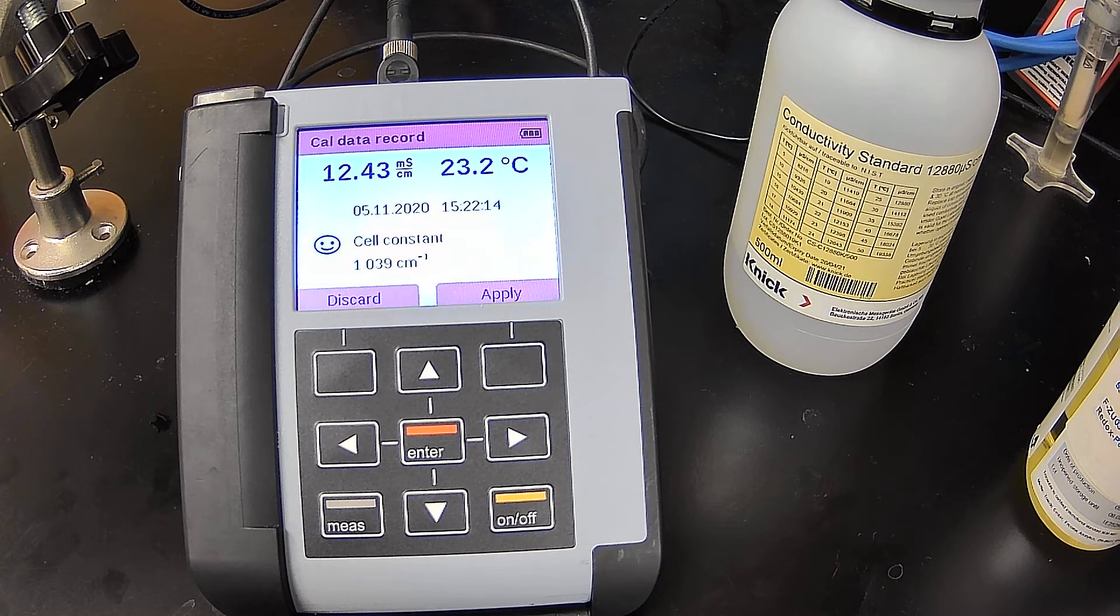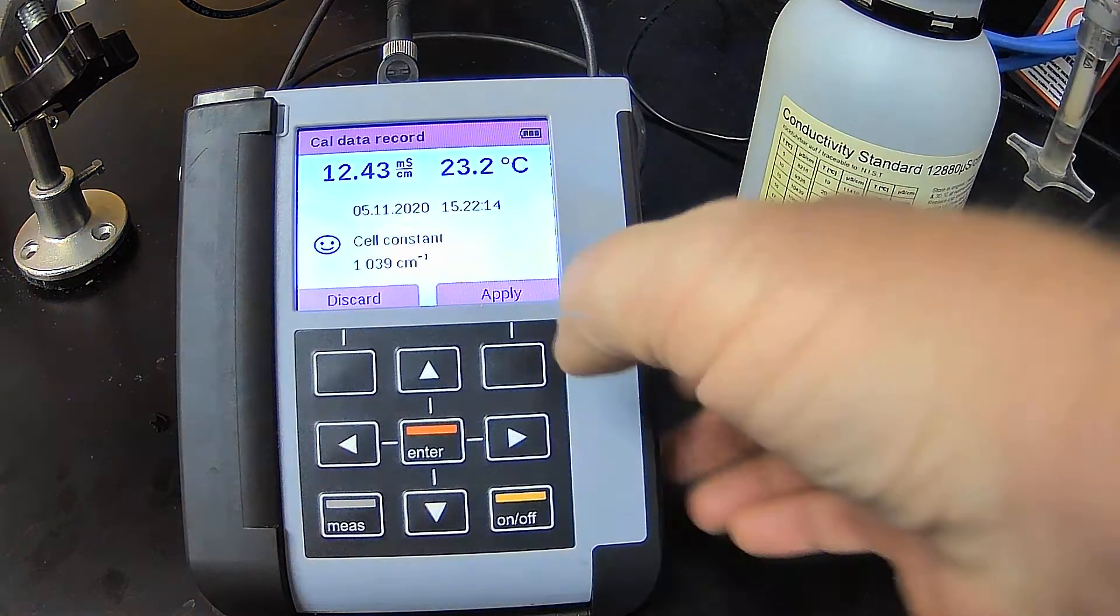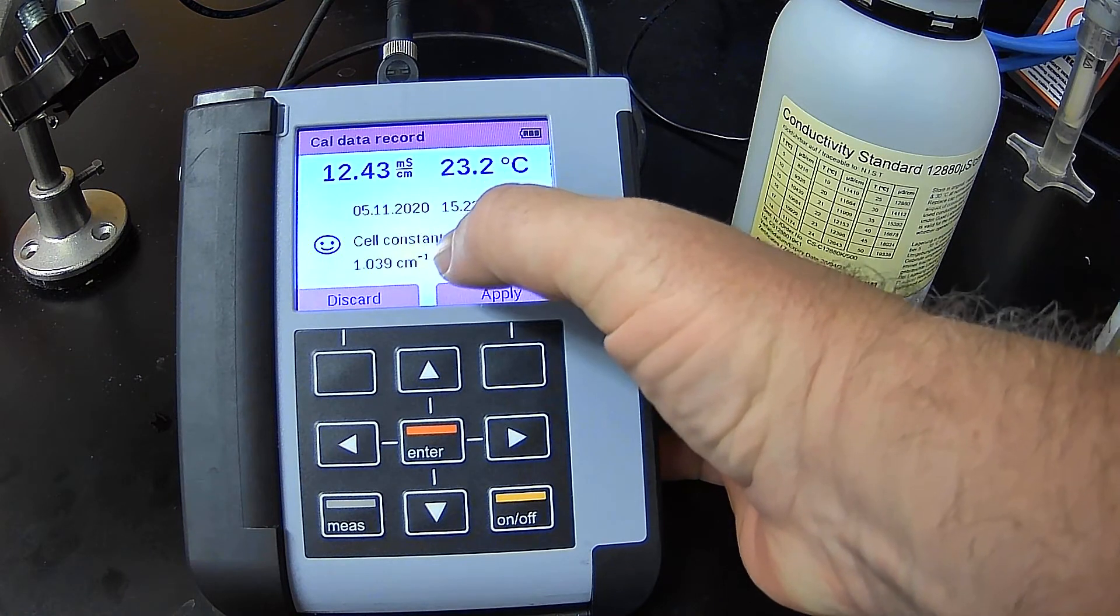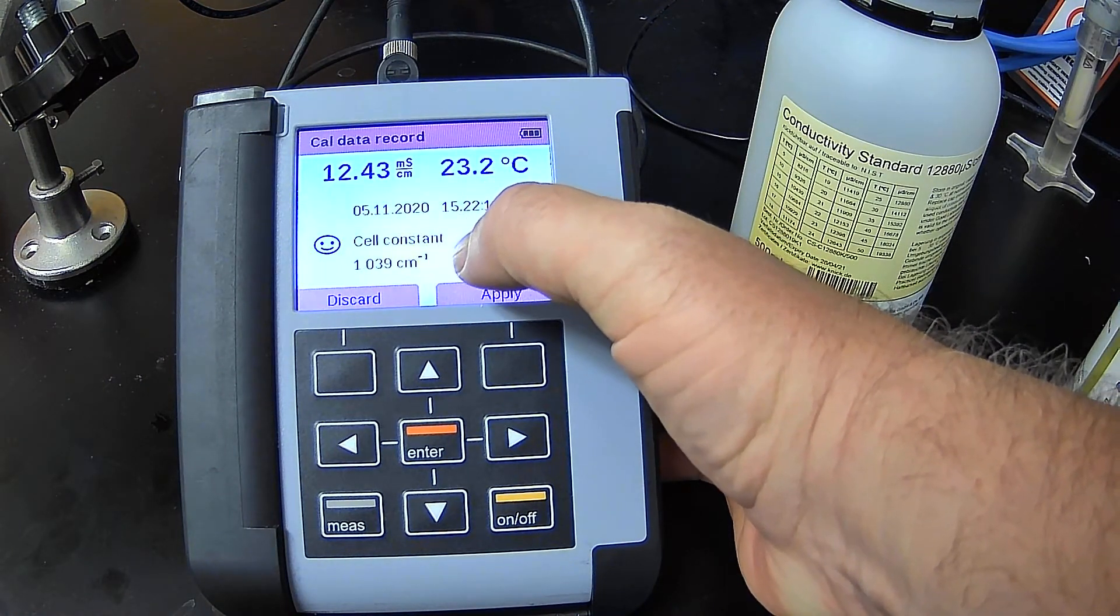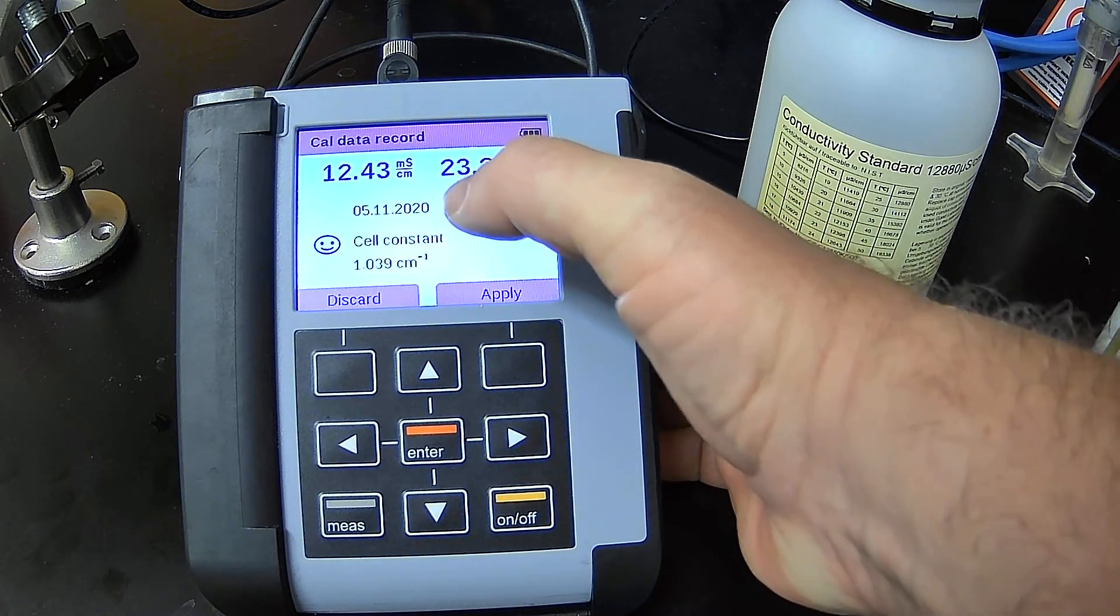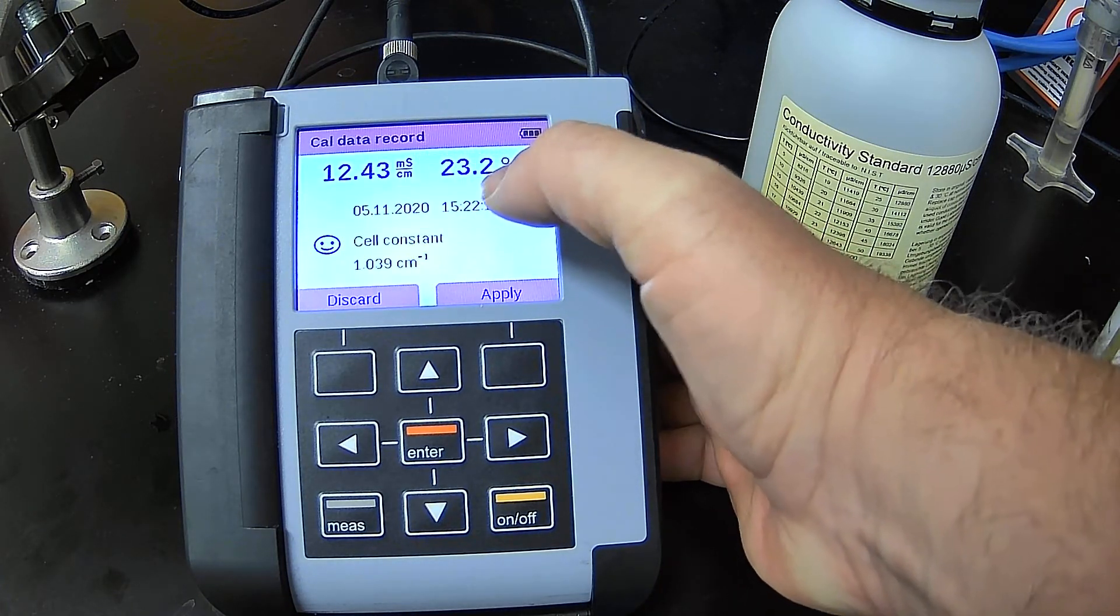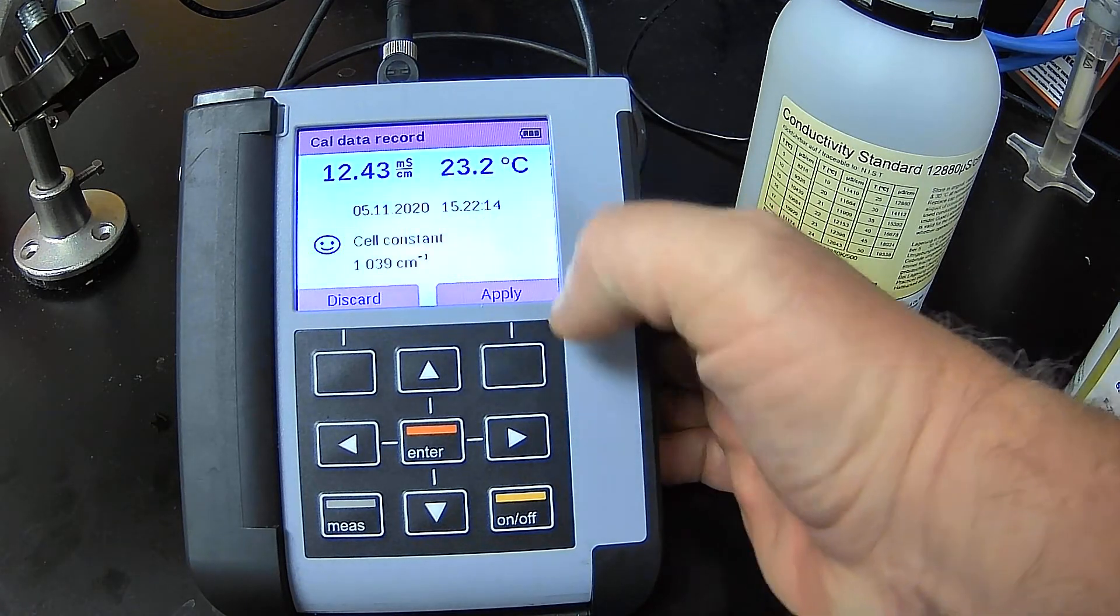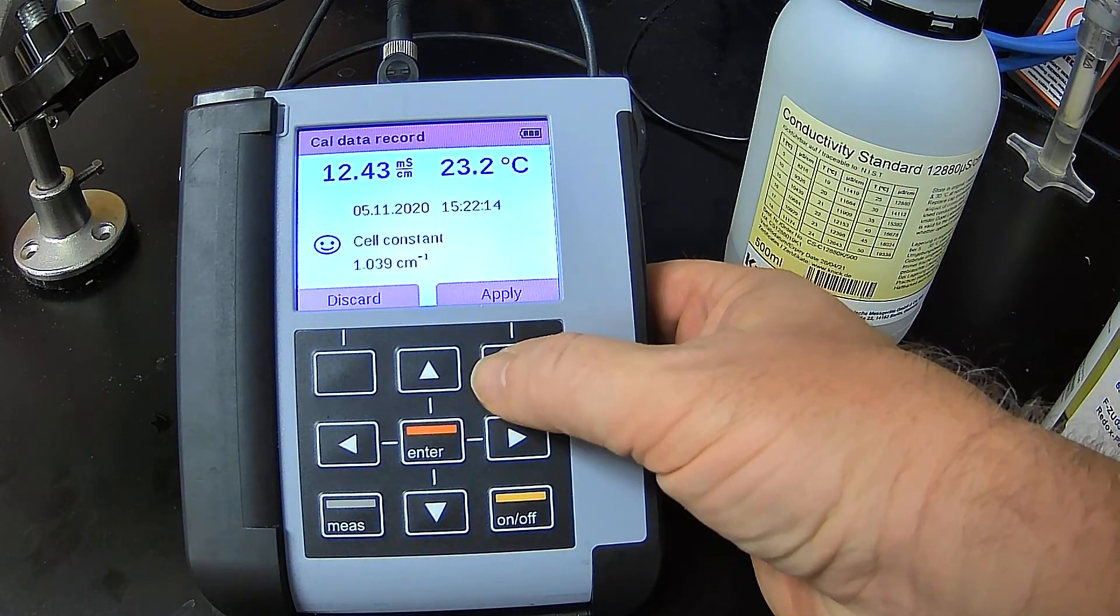So my cell constant adjustment was 1.039 at 23.2 degrees, which is 12.43 millisiemens, and I've got my little smiley there telling me that it likes the calibration. Everything is good.